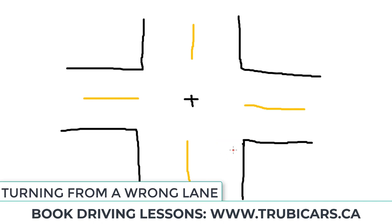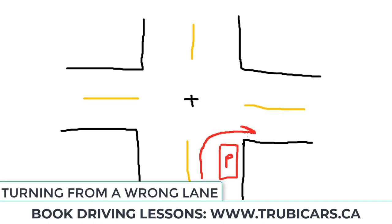Unless there is a parked car or the lane is closed — maybe construction — then you can turn right from the other lane. If there is a parked car right at the curb, that situation doesn't give you any other option, so you have to turn from the second lane.